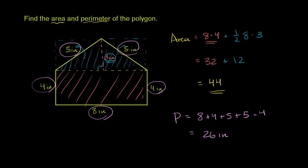And let me get the units right, too. Because over here, I'm multiplying 8 inches by 4 inches. So you get square inches. 8 inches by 3 inches. So you get square inches again. So this is going to be square inches. So area is 44 square inches. Perimeter is 26 inches.